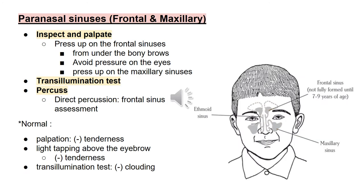Paranasal Sinuses. Inspect and palpate by pressing up on the frontal sinuses from under the bony brows, avoiding pressure on the eyes. Then press up on the maxillary sinuses. We can also do transillumination tests. To percuss, use direct percussion to assess the frontal sinuses. Normally, there is no tenderness on the paranasal sinuses upon palpation, and light tapping above the eyebrow should elicit no tenderness. There is no clouding of the paranasal sinuses upon transillumination test.